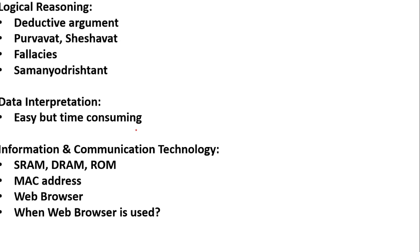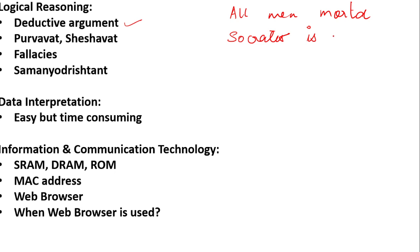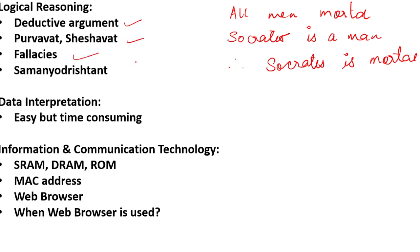Then comes logical reasoning. Every day Indian logic is being asked a lot. In the evening shift, there was a question on deductive argument. Deductive argument is like: All men are mortal — mortal means anyone who dies — and Socrates is a man, therefore we can deduce that Socrates is mortal. This is a kind of deductive argument. There was also a question on Purvavat and Seshwavat. Fallacies come up every day, and there was a question on Samanyu Drishtant as well. Data interpretation (DI) students said was easy.